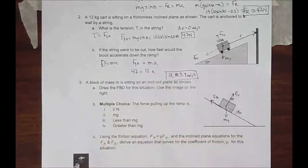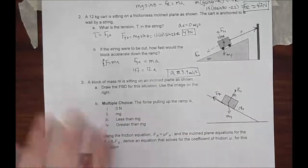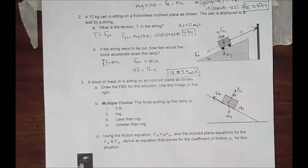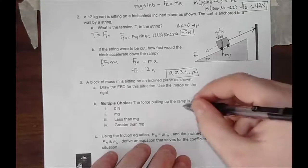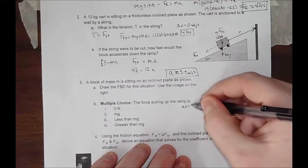The question B is, this is multiple choice. The force pulling up the ramp is, is it zero? Well, this system is not accelerating. So the acceleration is zero.